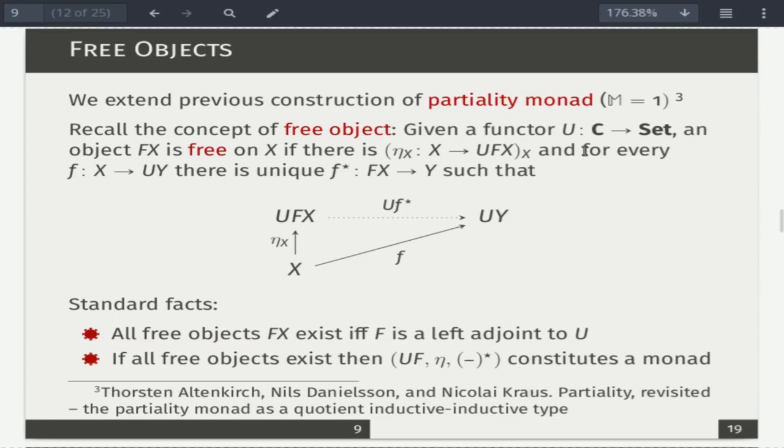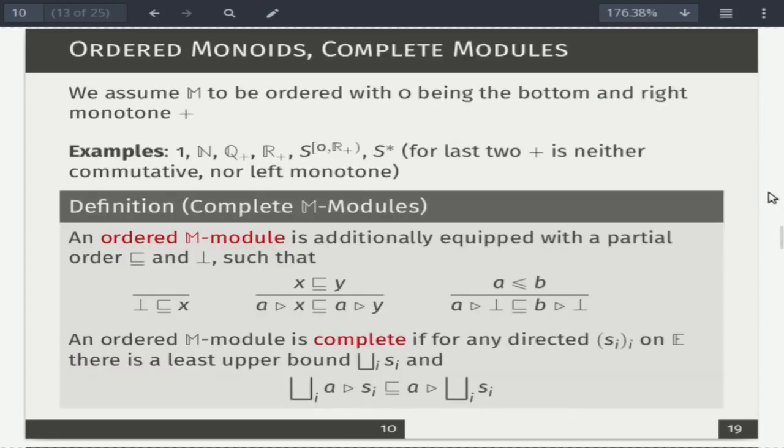So assuming that we know how to define a category, a certain category C, and we have a suitable forgetful function from that category to sets, then there is a general notion of a free object. So a certain correspondence sending a set x to f satisfying this universal property. Once this universal property is satisfied, so for every x there is f, then f extends to a left adjoint and we obtain a monad on sets as a composition of units u and f. So that would be a generic idea to construct a monad of interest, non-ad hoc.